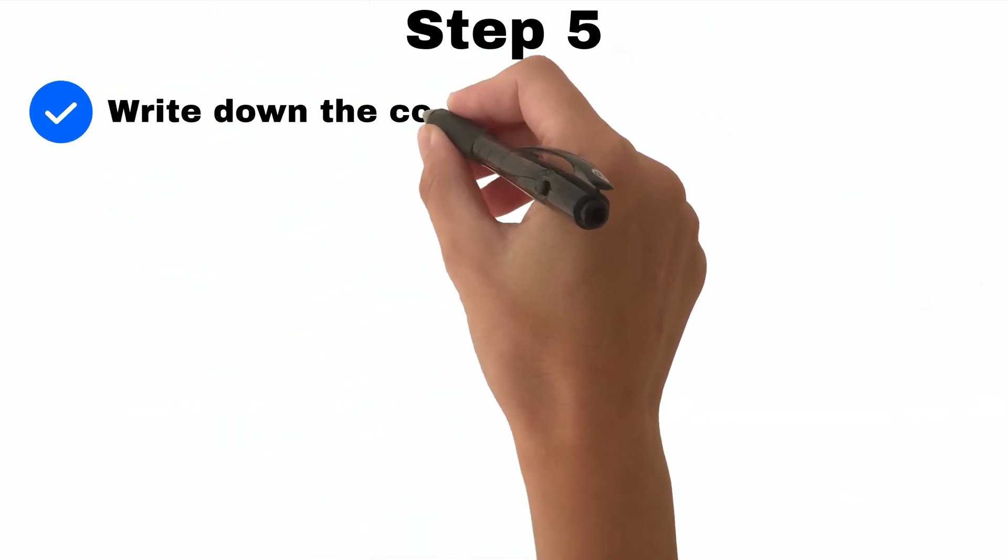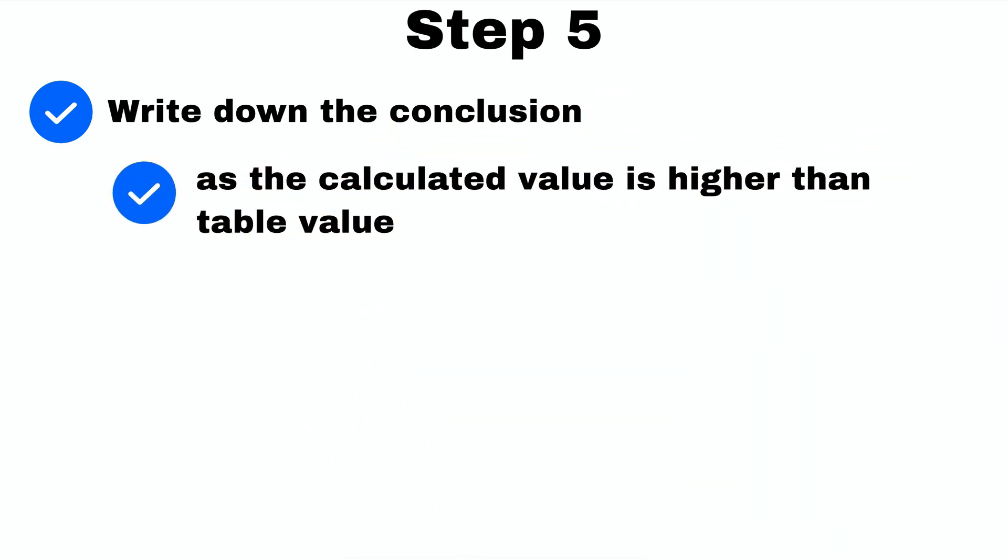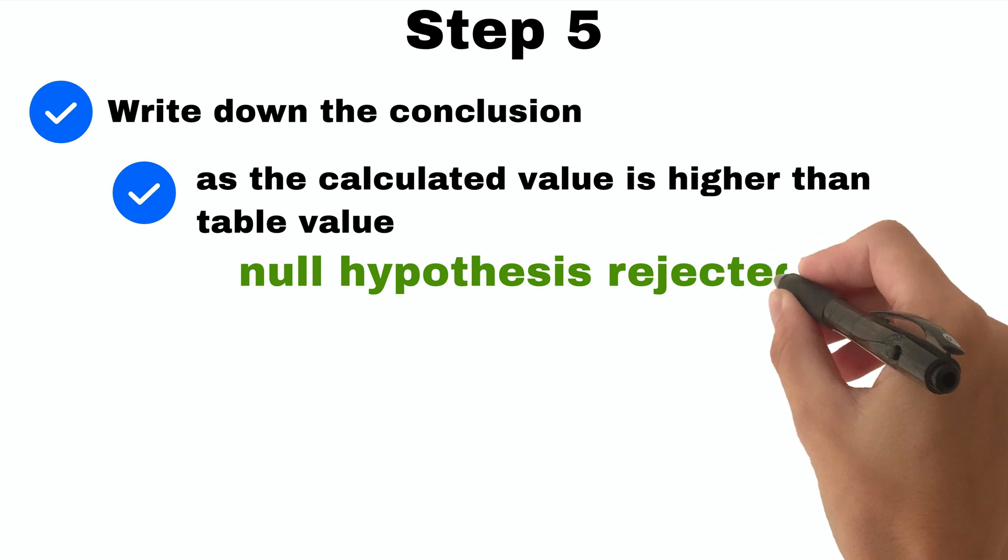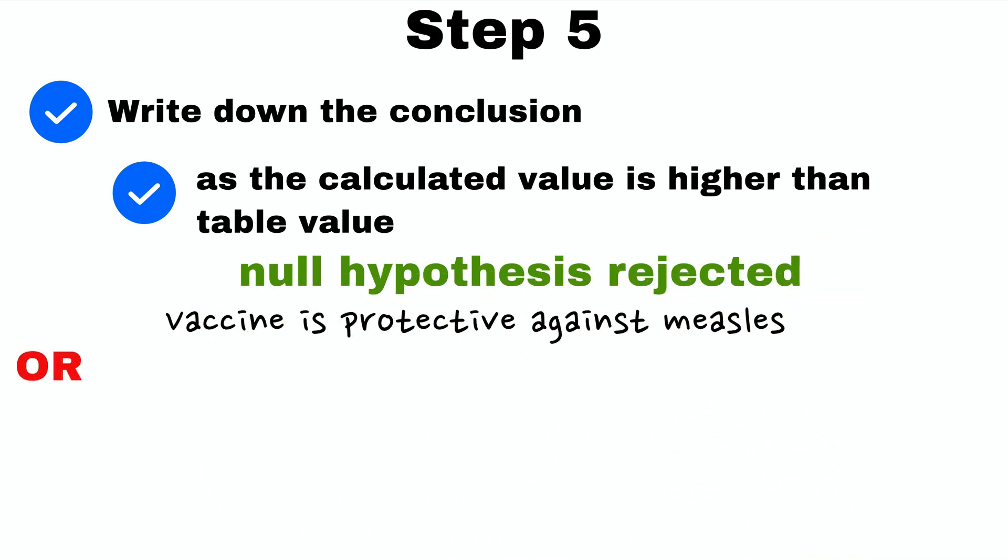Step 5: Finally, in step 5 you can write your conclusion. If the calculated value is higher than table value, null hypothesis is rejected and we can say that vaccine is protective against measles.